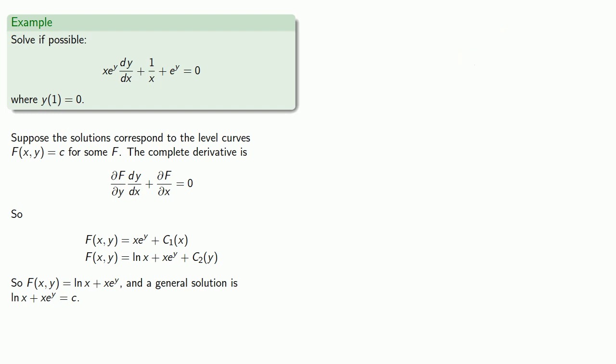And finally, we do have an initial condition: y of 1 is equal to 0. So to find the particular solution, we'll incorporate the initial condition, y of 1 equals 0. So remember that this says that our x value is 1 and our y value is 0.